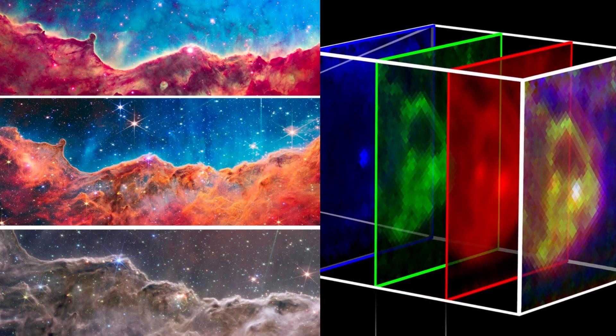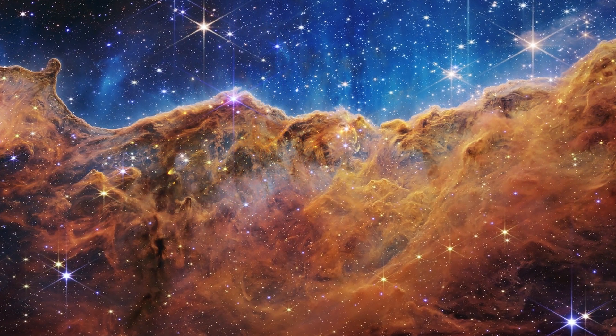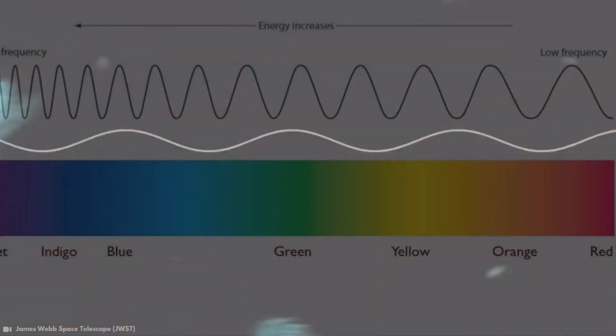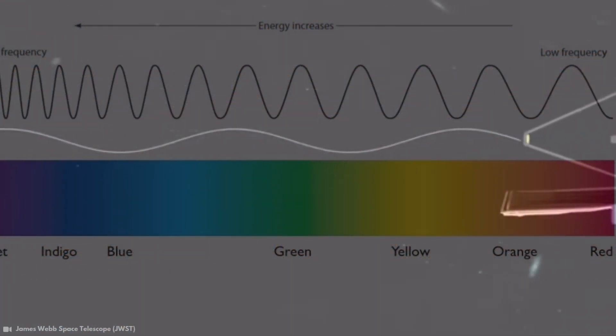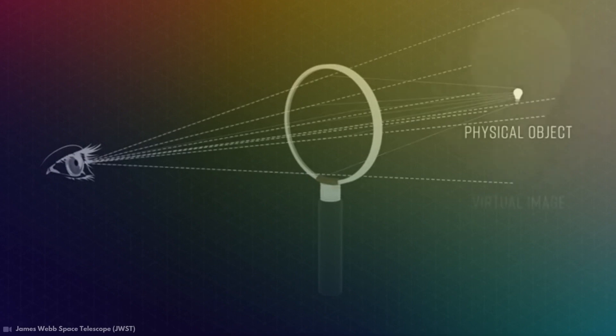After these are combined, adjustments such as normal white balance, contrast and color settings are made. In this way, the difference caused by the stretching of the light in space is eliminated and the raw data collected by Webb is made in a way that the human eye can perceive.